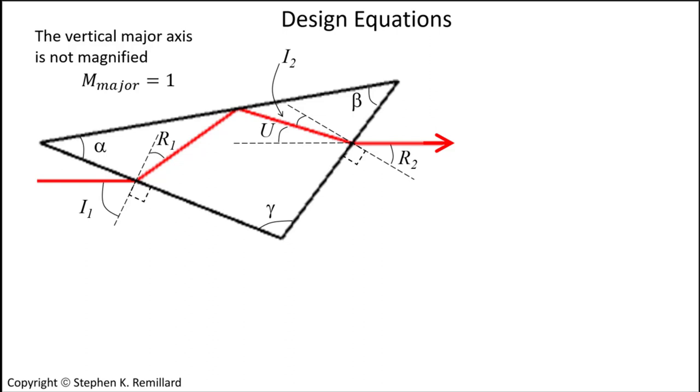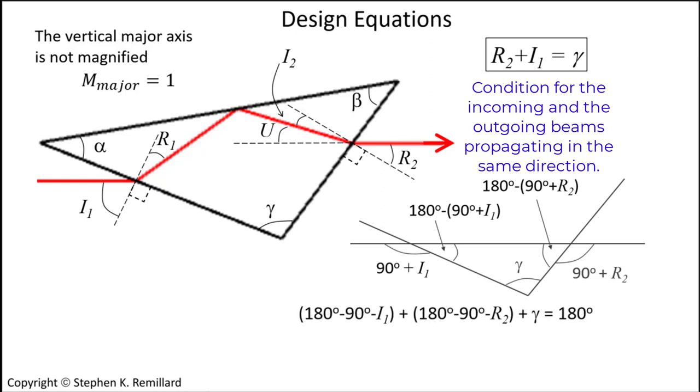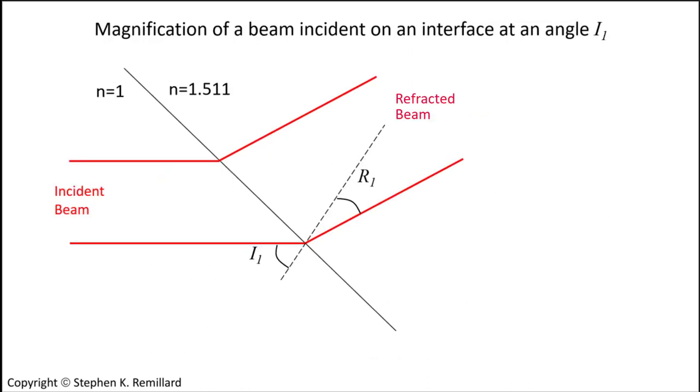It will also be useful to know how the incoming and outgoing incident angles are related to the prism. A picture shows why the sum of these two external angles is equal to the prism angle, gamma. The horizontal line represents both the incoming and outgoing beams. This angle shown to the left is 90 degrees plus the angle of incidence, making this interior angle 90 degrees minus the angle of incidence. Likewise, this angle on the right is 90 degrees plus the outgoing angle of refraction, making this interior angle 90 degrees minus that angle of refraction. Because the angles of a triangle add up to 180 degrees, the final result is that the outgoing angle of refraction plus the incoming angle of incidence adds to the lower vertex angle, gamma.